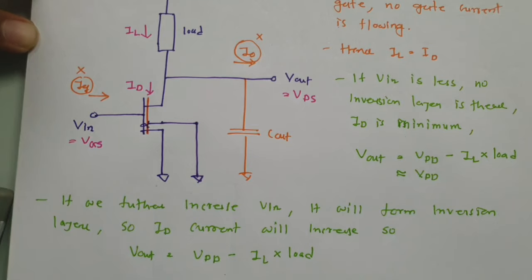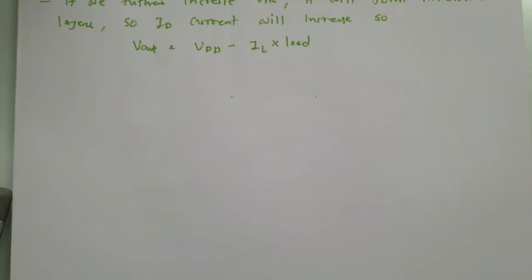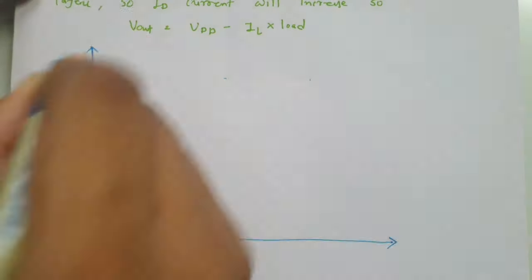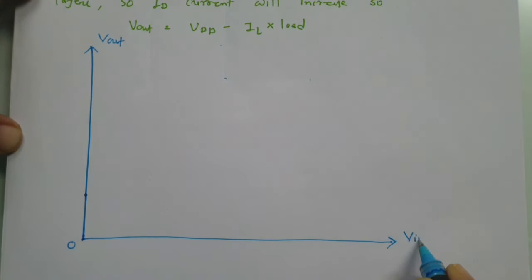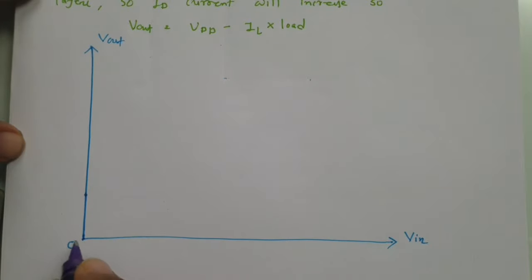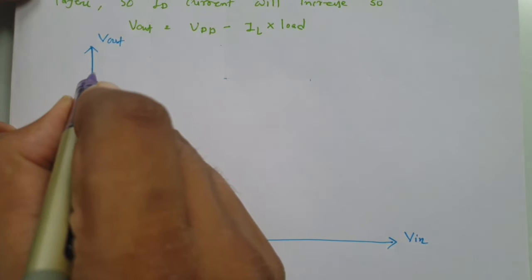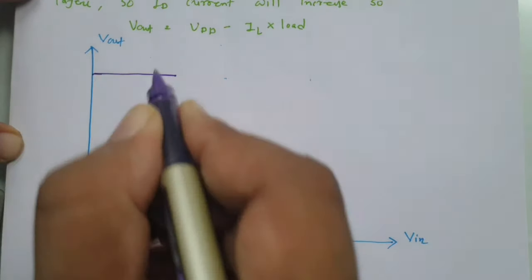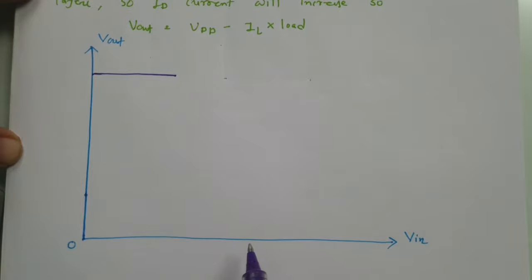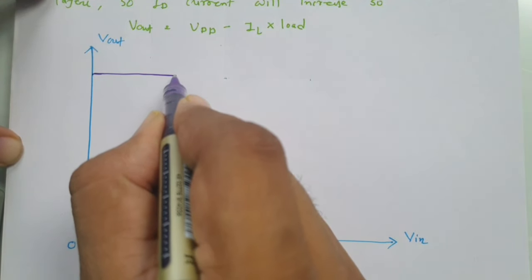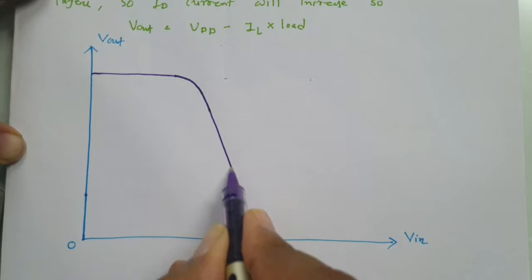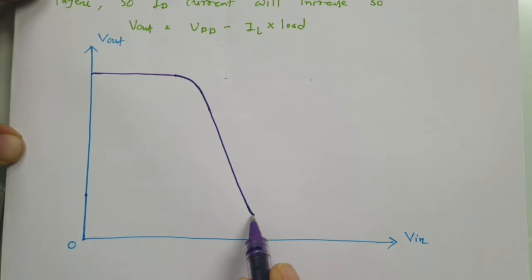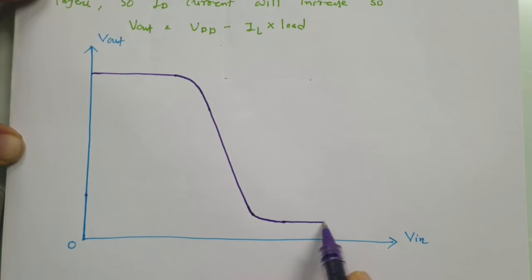Let us understand this by plotting the voltage transfer characteristics. On the Y axis we have output voltage, and on the X axis we have input voltage. When input voltage is low, output voltage is high. As we increase input voltage, an inversion layer forms, ID current flows, and output voltage starts to decrease until it reaches a minimum value.